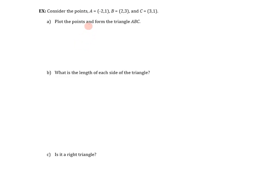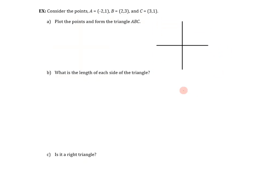Consider points A = (−2, 1), B = (2, 3), and C = (3, 1). We're first asked to plot the points and form triangle ABC. Point (−2, 1) is 2 to the left and up 1. Point (2, 3) is 2 to the right and up 3. Point (3, 1) is 3 to the right and up 1. Connecting those three points with straight lines forms the triangle.